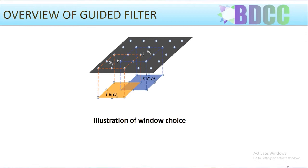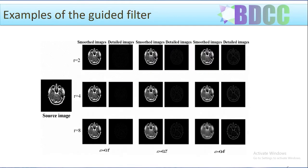Because of this feature, guided filter is helpful in a variety of applications such as colorization, up-sampling, and picture matting. Guided filter has an additional attribute called the structure-transferring property, in addition to the edge-preserving property. If the guiding image and the input are the same, edge-preserving smoothing will be performed but the structure will remain intact. The smoothing process is regulated by the structure of the guiding image when it differs from the input.